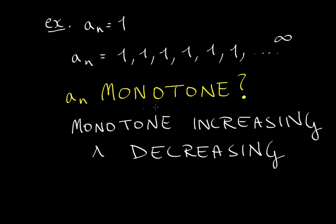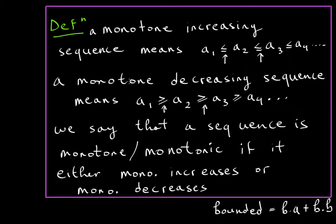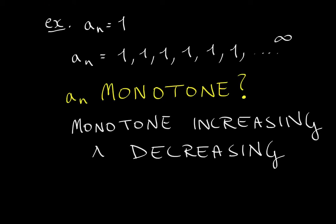Some of you may understand why, but let's go back to the definition. A sequence is monotone decreasing if a sub one is greater than or equal to a sub two, and so on — note the 'greater than or equal to.' One possibility is that all terms are equal to each other. Similarly for monotone increasing: a sub one is less than or equal to a sub two. The equal signs are why the constant sequence of all ones is both monotone increasing and monotone decreasing. In the next video, I will present the monotone convergence theorem, which we will use for lim sup and lim inf, so stay tuned.